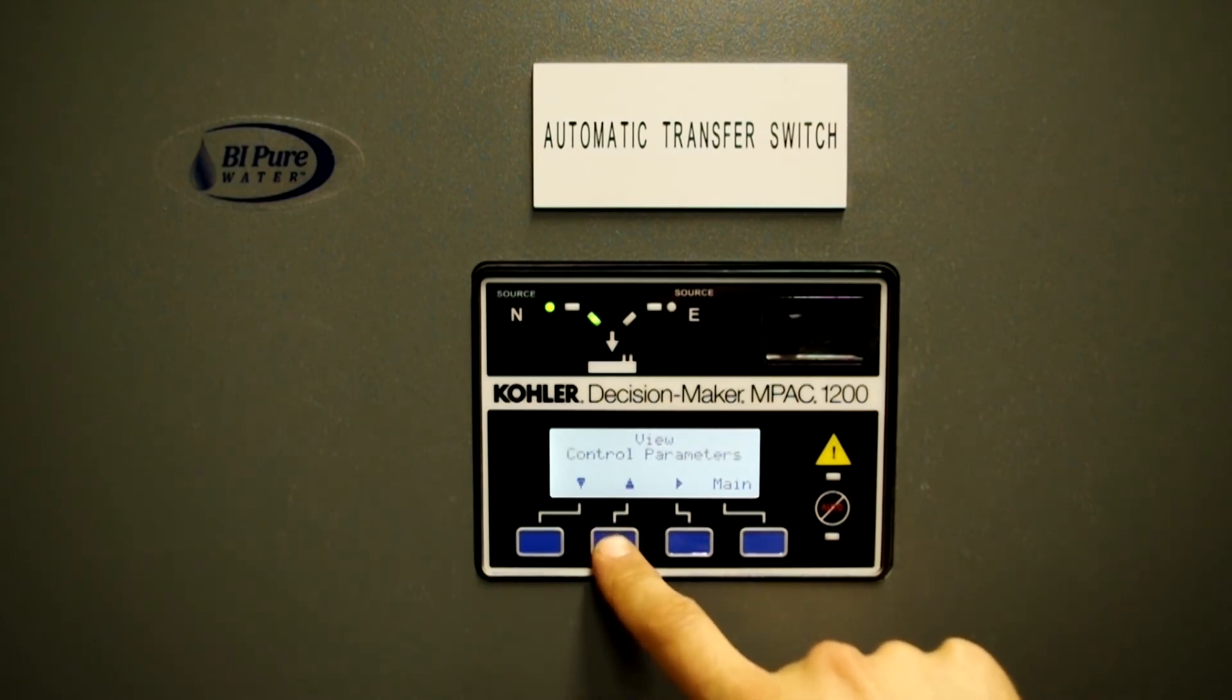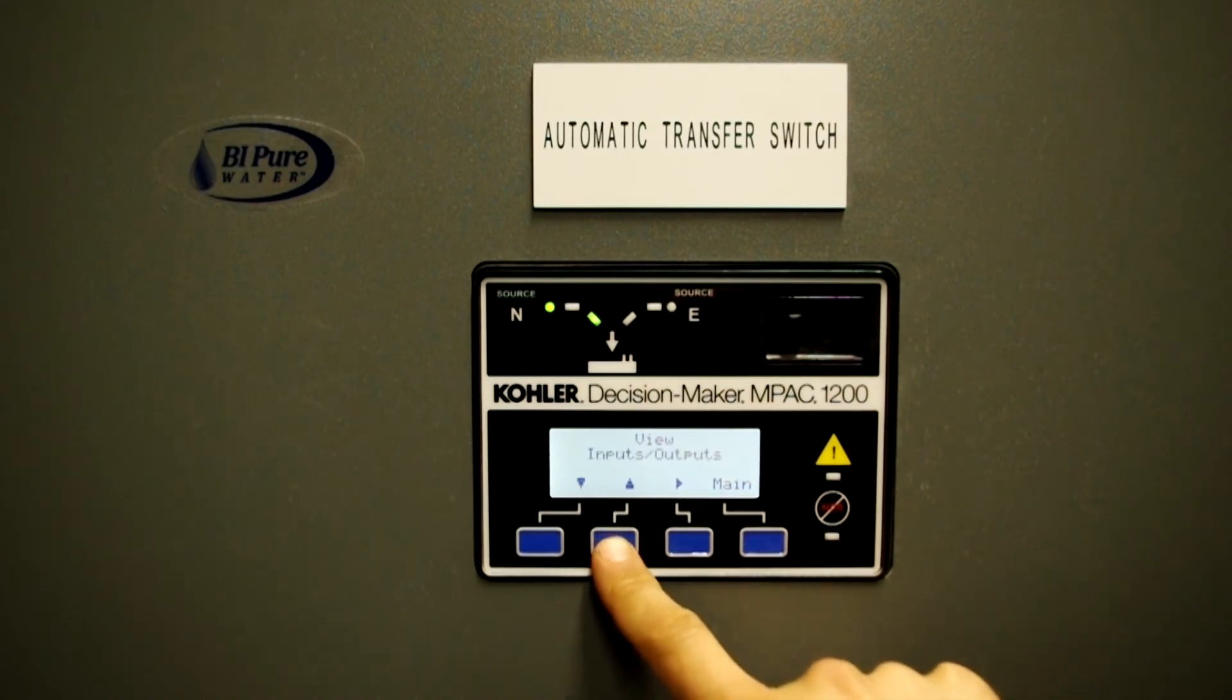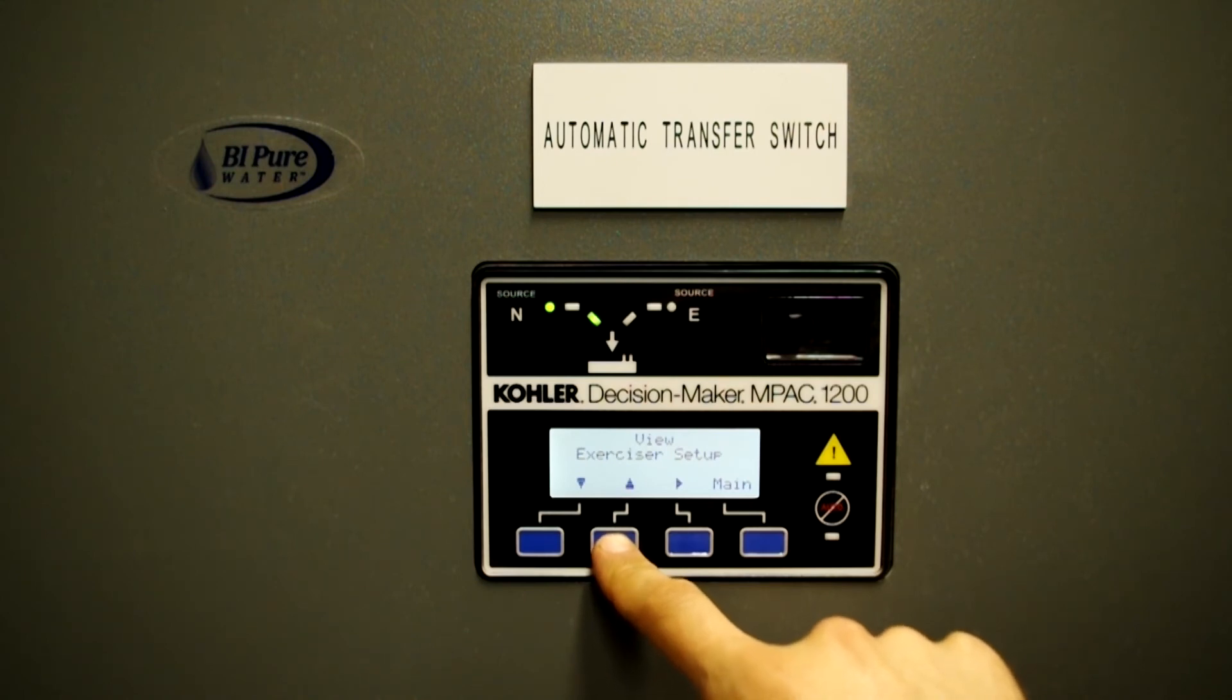And then you can also view control parameters, communication setup, common alarms, inputs and outputs, time delays, and source setup, as well as your system setup, your exerciser setup if you need to test the transfer switch, and maintenance records.